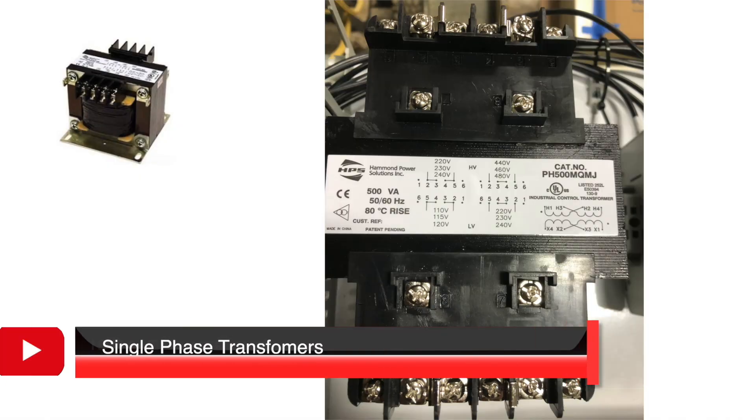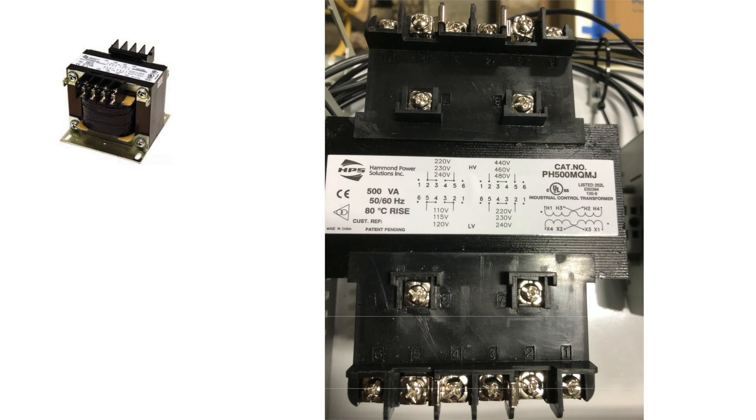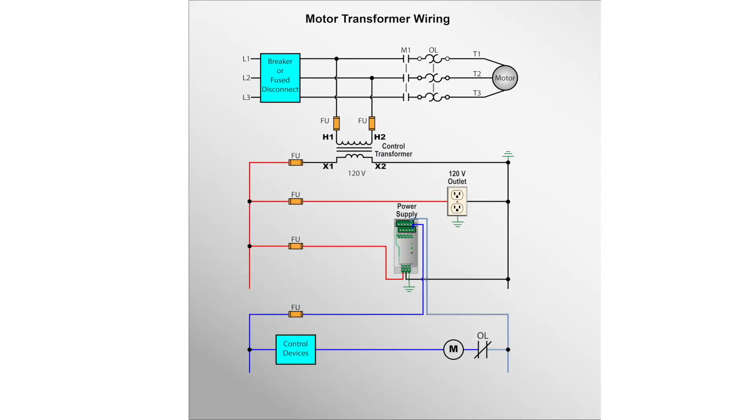Now onto single-phase transformers. These transformers can be used wherever systems that operate at 120 volts are needed. The step-down transformers are installed when the circuits are not rated for the line voltage. Nowadays, control circuits are designed using 24 volts DC, but single-phase transformers are still needed to step-down voltage for devices that operate at 120 volts AC. The drawing provided shows the typical connection for a step-down control transformer and also shows the power supply needed to convert 120 volts AC to 24 volts DC.